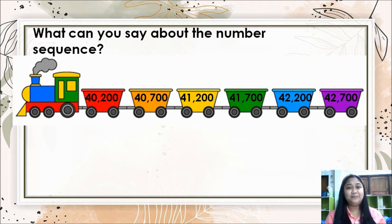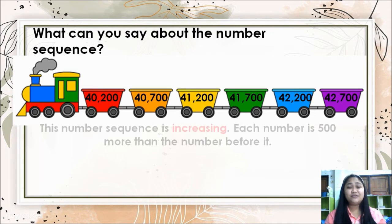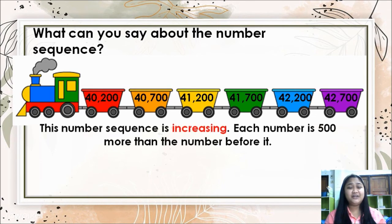As you can see, this number sequence is increasing, and each number is 500 more than the number before it.